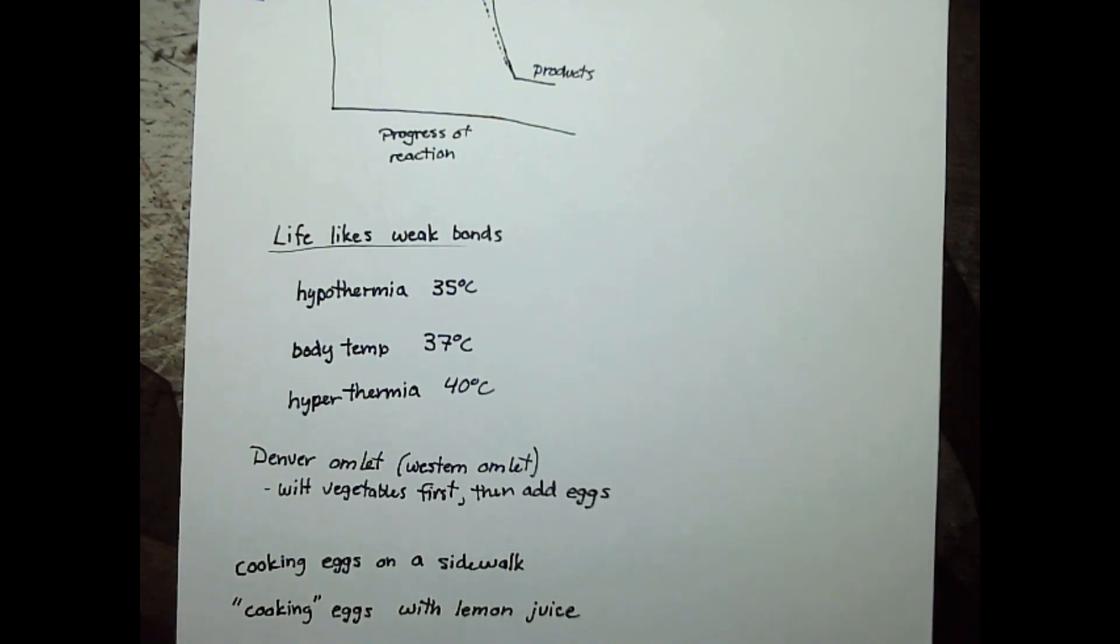This is why you can cook eggs on a sidewalk. Even changing the pH of a solution can denature the protein. Cooking eggs with lemon juice is actually a thing. The high acidity or low pH of lemon juice can denature the egg protein.